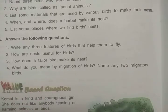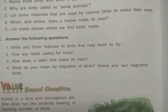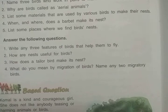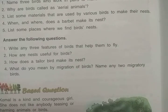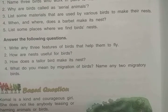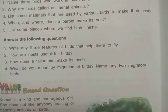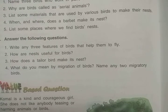How does the tailor bird make its nest? The tailor bird stitches leaves together using small twigs as threads to make its nest. It stitches the leaves with the help of small twigs acting as thread.